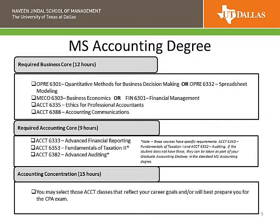The MS Accounting degree has four classes, or 12 hours, in the required business core. The first is OPRE 6301 or 6332 — you can choose quantitative methods for business decision making or the spreadsheet modeling class. The second is MECO 6303, which is business economics, or you have the option of Finance 6301, a financial management course. We also have two additional required courses: Accounting 6335, Ethics for Professional Accountants, and Accounting 6388, the accounting communications course. These four courses comprise your required business core.